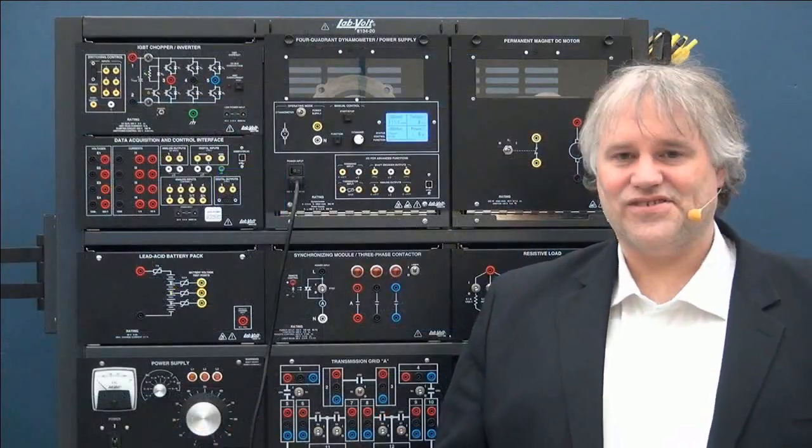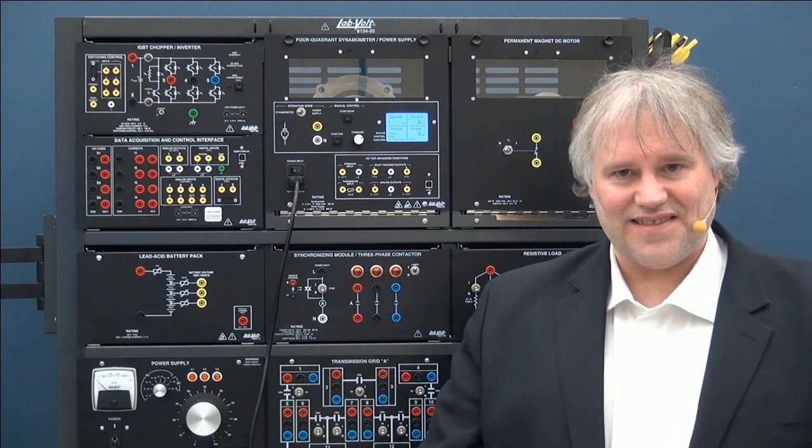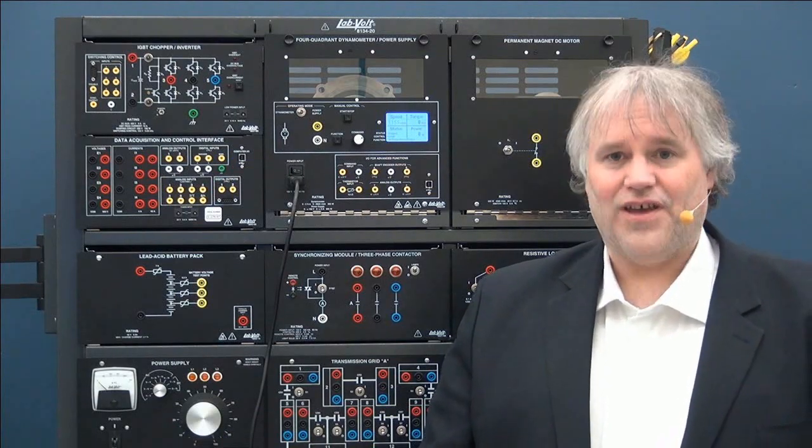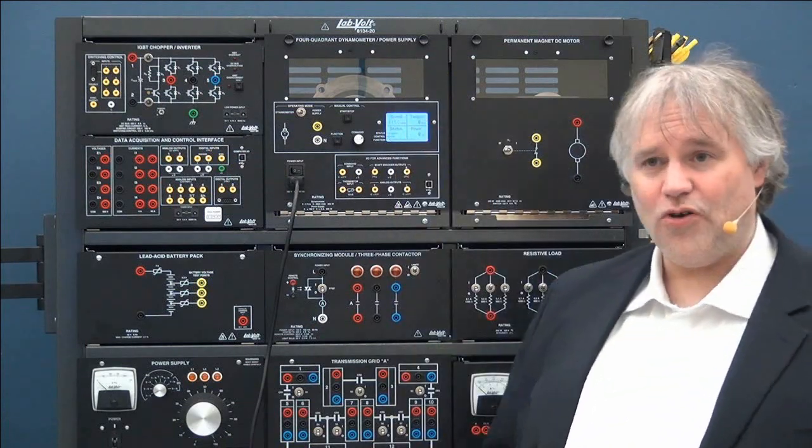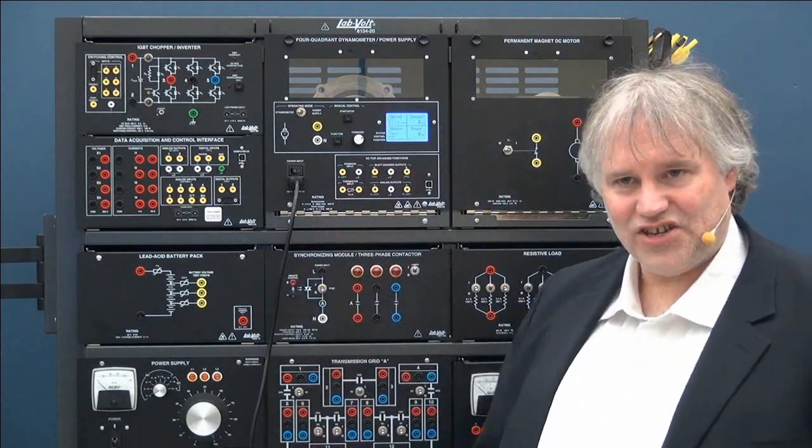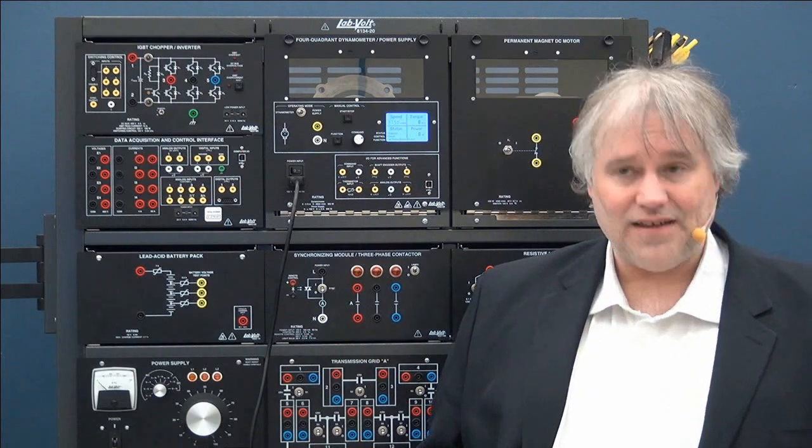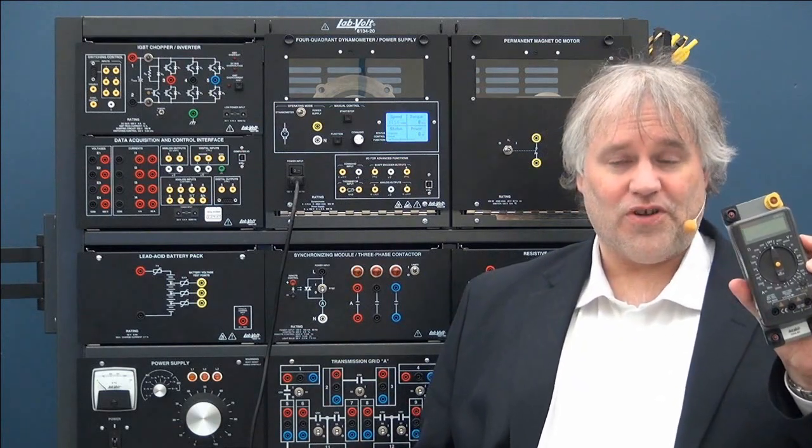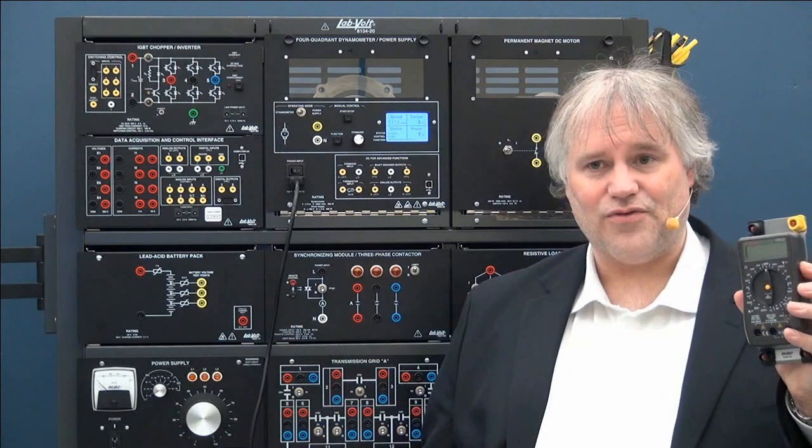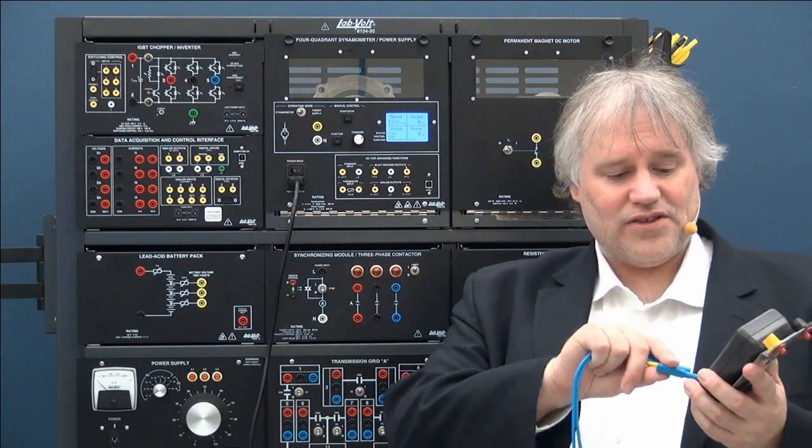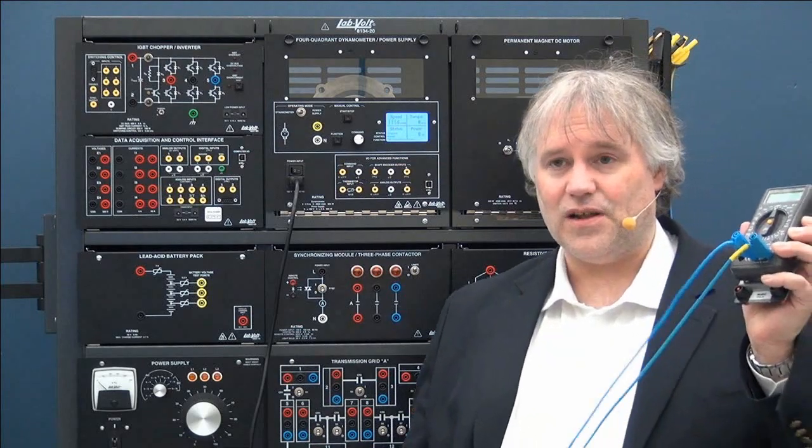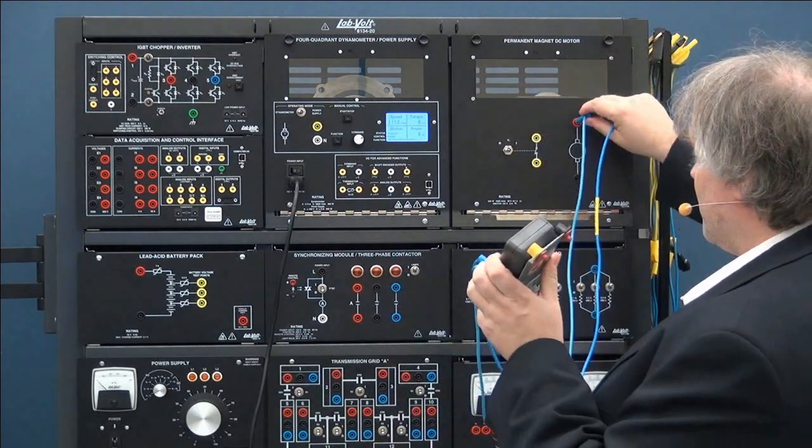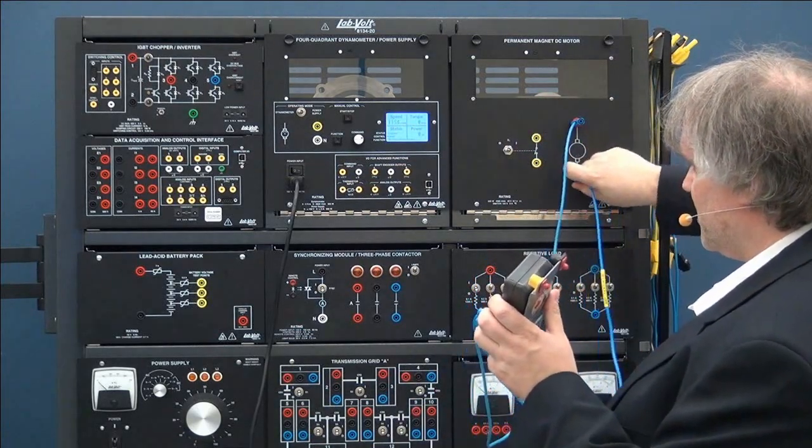In the second exercise they will study the permanent magnet DC machine as a generator. To do that they will use the dynamometer in prime mover mode and change the speed of rotation. They will also need a general purpose multimeter. Although they could also connect into the data acquisition. And they will use that to monitor the voltage and the current that is available in the machine.